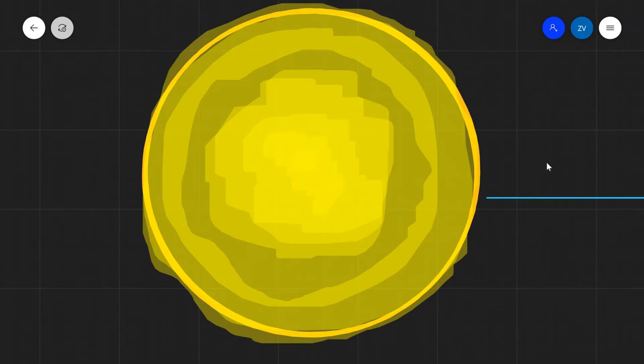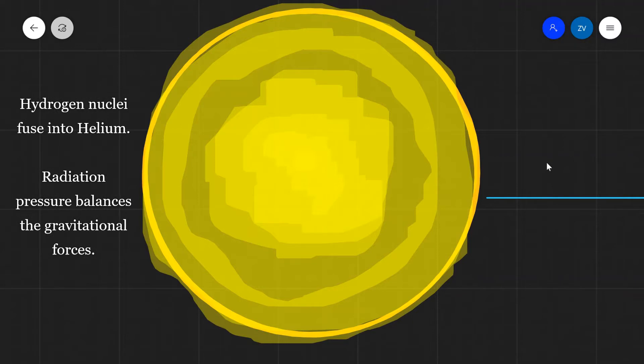During the main sequence part of the star's life cycle, the star will be fusing hydrogen nuclei into helium and shining away. During this time, the radiation pressure is in perfect balance with the gravitational forces which are trying to crush the star.